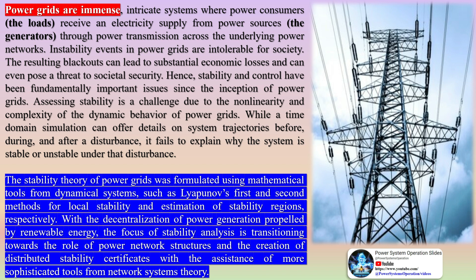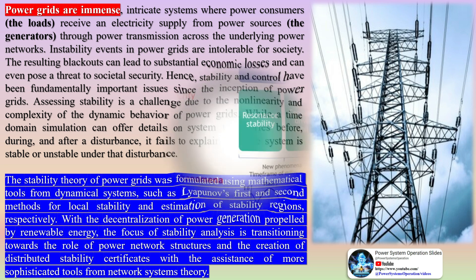Power grids are immense, intricate systems where power consumers (the loads) receive an electricity supply from power sources (the generators) through power transmission across the underlying power networks. Instability events in power grids are intolerable for society — the resulting blackouts can lead to substantial economic losses and can even pose a threat to societal security. Hence, stability and control have been fundamentally important issues since the inception of power grids.